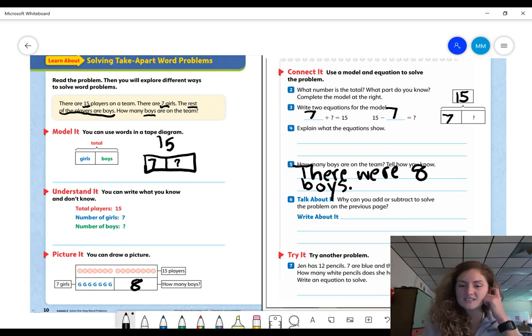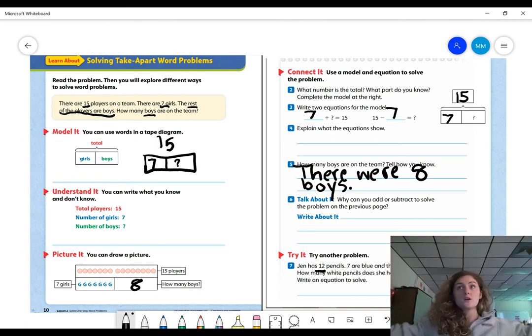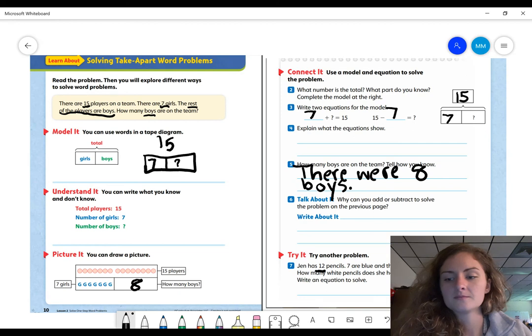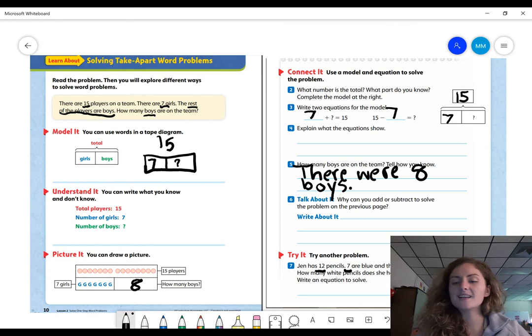Let's look at number seven. This is our last one. It says, Jen has 12 pencils. Seven are blue and the rest are white. How many white pencils does she have? Here's what I'm going to do. I'm going to think out loud with you, but you have to find the final answer. So it says, Jen has 12 pencils. 12. Hmm. 12 all together, which means that is our whole. So I'm going to make a 12. I'm going to make a bar diagram. Seven of the pencils are blue. So seven can go, I'm going to put it over here. Seven are blue and the rest are white. How many white pencils does she have? Write an equation to solve. So do I know how many white pencils I have? No, I do not.